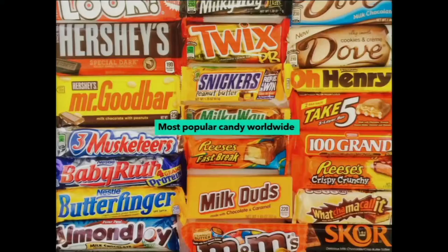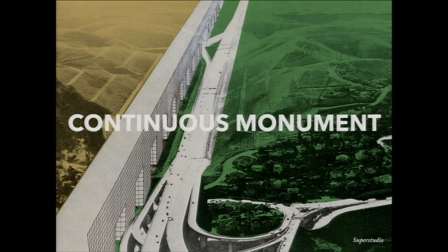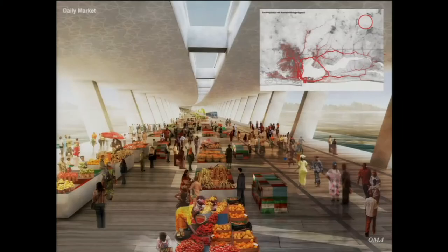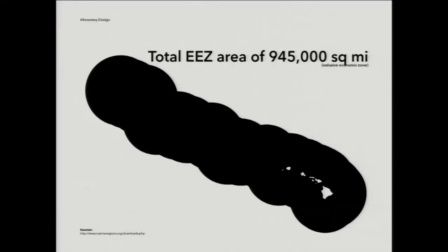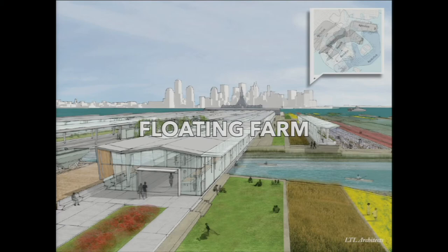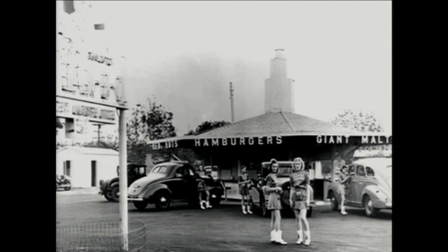Chocolate is the sweet most eaten in the world by volume of consumption. But in 20 years, due to scarcity of cocoa and land to produce it, chocolate will be as expensive as gold. To prevent this, the Continuous Monument project proposes building a smart wall. And in Hawaii, there is a shortage of farmland. The Exclusive Economic Zone (EEZ) is very large, so the idea is to utilize ocean space to create floating farms. The self-sufficiency of Hawaii for food is only about 10 percent, which could be improved.